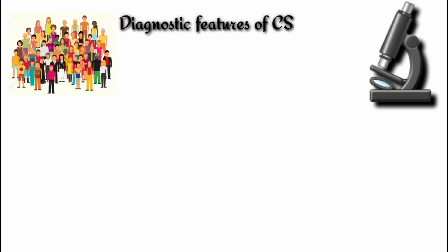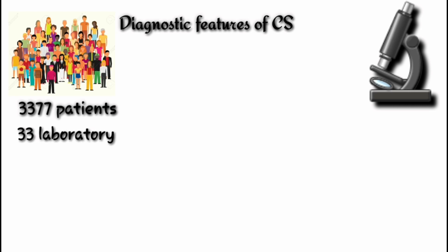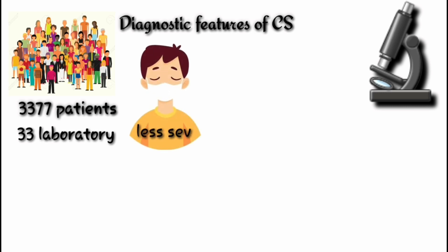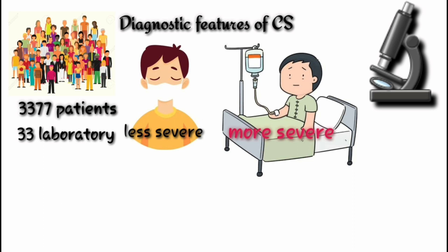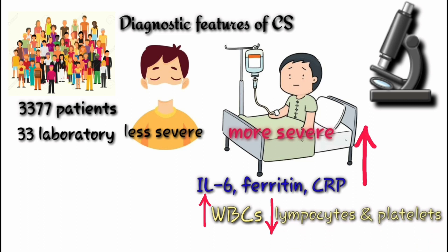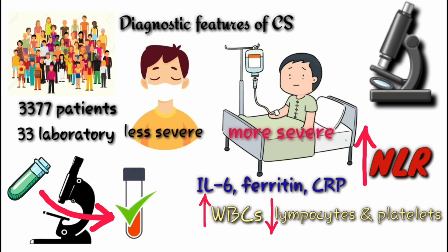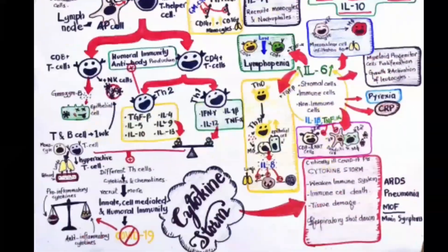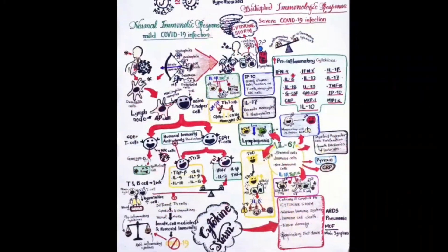Regarding diagnostic features of cytokine storm, there is an urgent need to detect laboratory parameters useful for its diagnosis. A recent meta-analysis of 21 studies including 3,377 patients and 33 laboratory biomarkers suggests that compared with less severe subjects, more severe patients are characterized by high blood levels of IL-6, ferritin, and CRP, paralleled by high white blood cell counts but low lymphocyte and platelet counts. Significantly higher neutrophil-to-lymphocyte ratio could provide a valuable diagnostic platform for critically ill COVID-19 patients. Thanks for watching and please subscribe, like, and comment below.